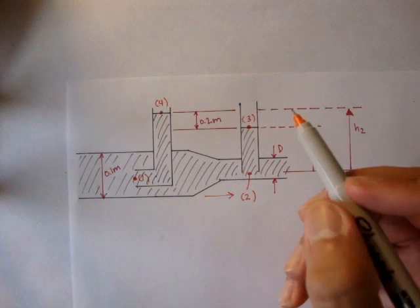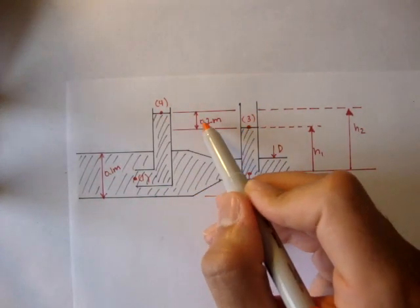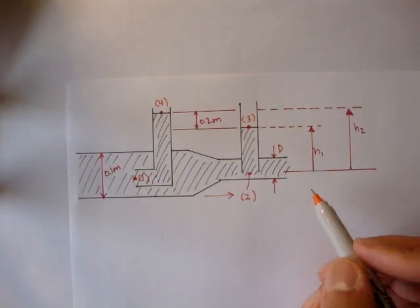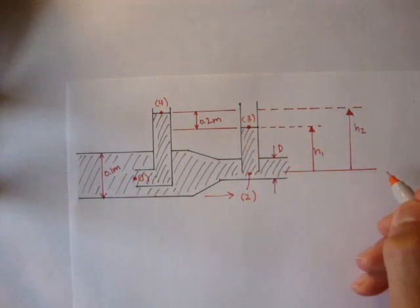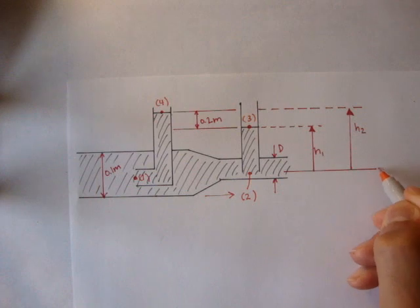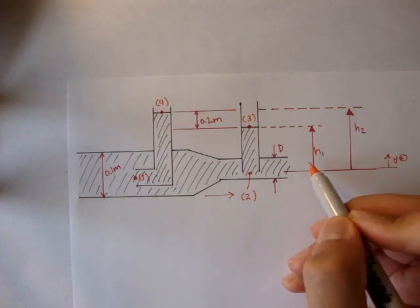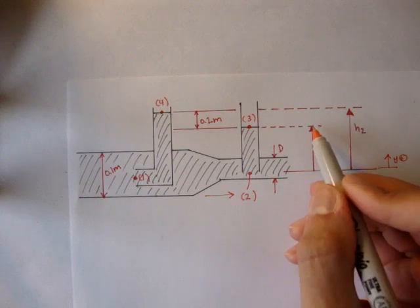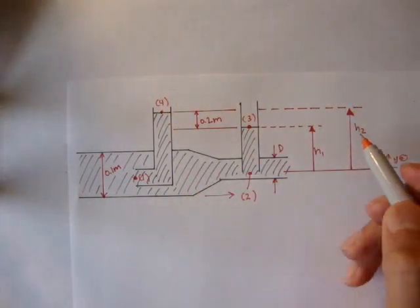And the difference in height of point three and point four is 0.2 meters. And the datum, and our height from, we can say our datum, to point three is h1, and then to point four is h2.